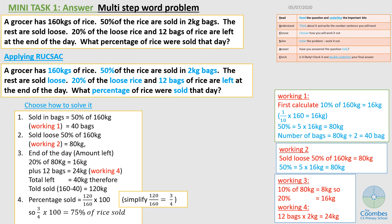Then it says at the end of the day, 20% of loose rice and 12 bags of rice are left. So 20%, remember, the amount of loose rice was 80 kg. So 20% of that. Now to do this, let me work this out. 10% of 80 is 8 kg. So 20% will be double of that, which is 16. So 16 kg of loose rice were left.